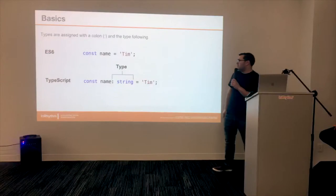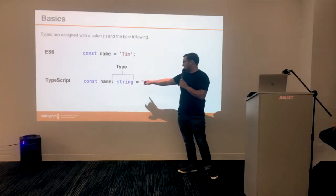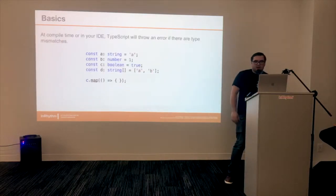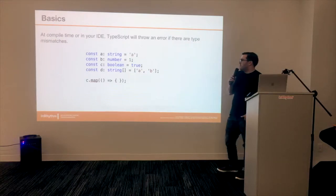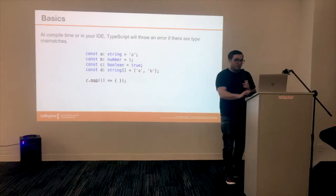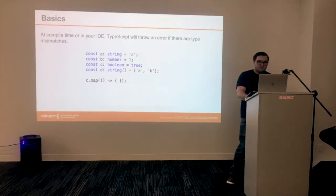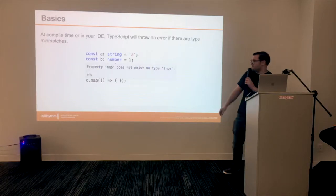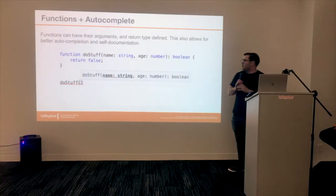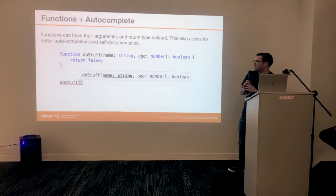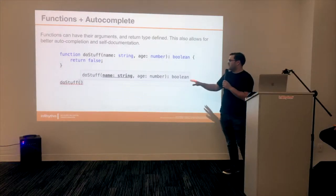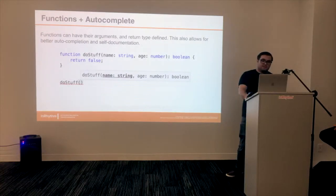Getting into some of the basics: compared to ES6, all you're really doing is adding a colon and the type. Basic types are string, number, and boolean. You can also have arrays — for example, an array of strings. If you try to call map on a boolean, VS Code will give you an error right there telling you that you can't do it. With code completion, if you're working with functions, you just type the function name and it pops up showing you exactly which parameters, their types, and the return type — which is an amazing feature.